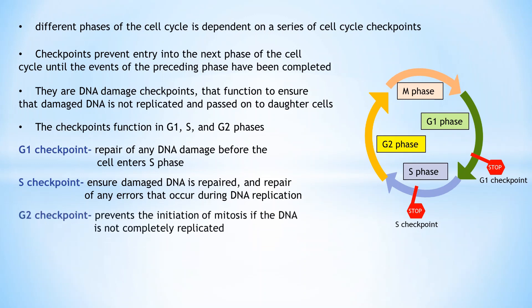The G2 checkpoint prevents the initiation of mitosis if the cell contains DNA that has not been completely replicated or contains unrepaired lesions. Such damaged DNA activates a signaling pathway that leads to cell cycle arrest.